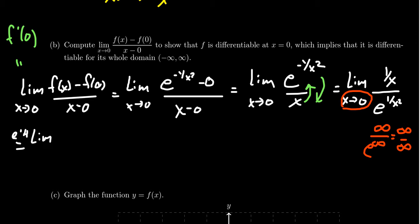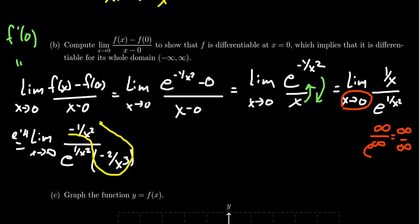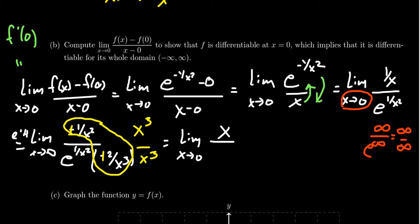Applying L'Hôpital's rule, we take the derivative of top and bottom. The top, one over x, gives negative one over x squared. The derivative of e to the one over x squared by the chain rule gives back e to the one over x squared times the inner derivative, which is negative two over x cubed. Now there's some simplification between negative one over x squared and that factor. I multiply top and bottom by x cubed over x cubed — the negatives cancel — and you end up with the limit as x approaches zero of x over two times e to the one over x squared.